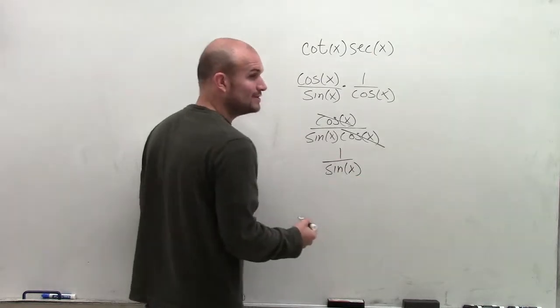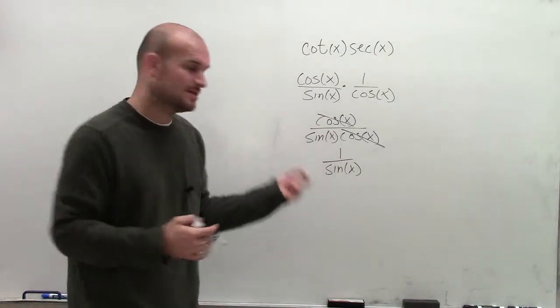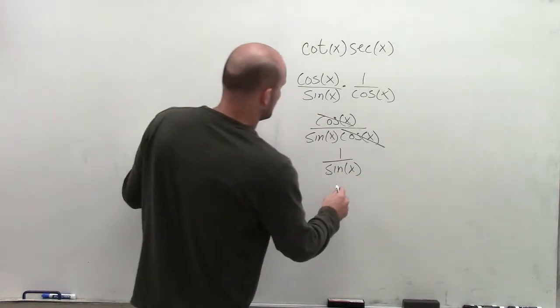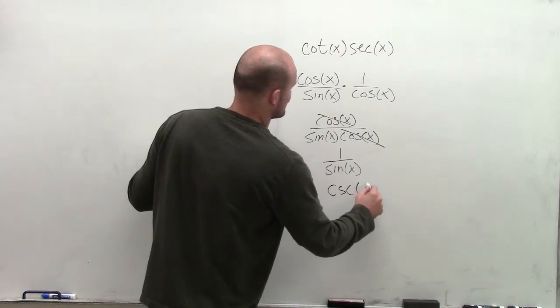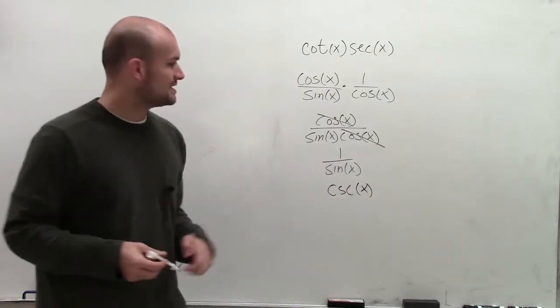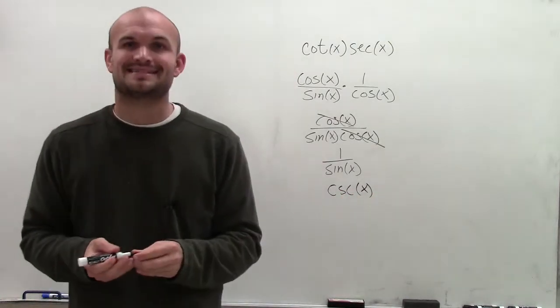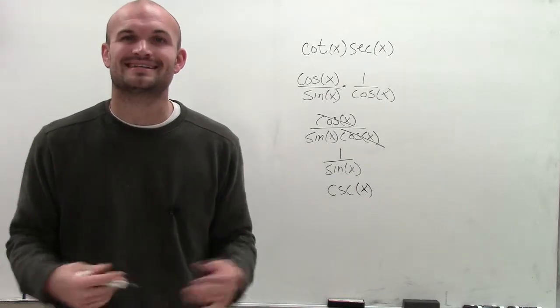Going back to our reciprocal identities, we know that 1 over sine of x is going to be the cosecant of x. So there you go, ladies and gentlemen — that's how you simplify your trigonometric identities. Thanks.